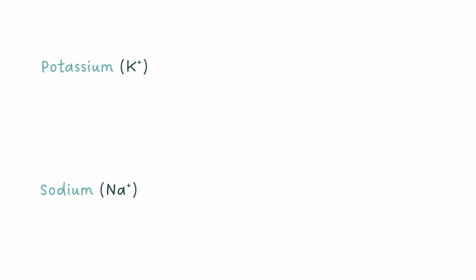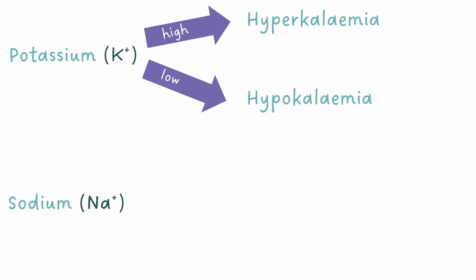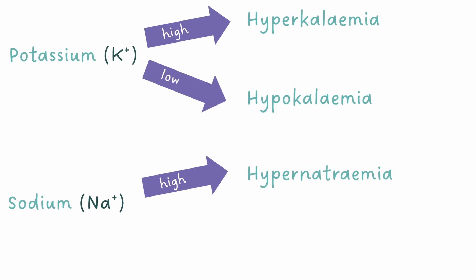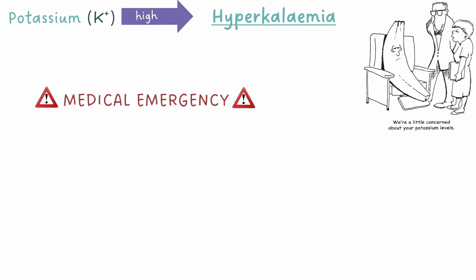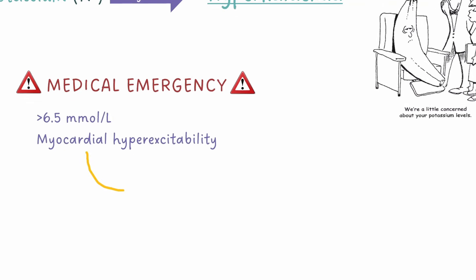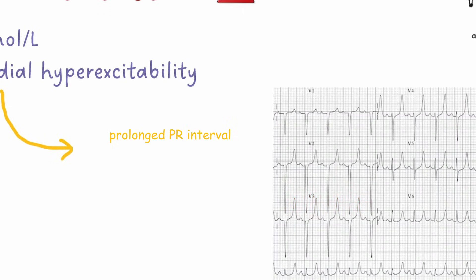Next, we have our electrolytes. We need to check for hyperkalemia, hypokalemia, hypernatremia, and hyponatremia. Hyperkalemia can be a medical emergency if it's raised above 6.5, or there are signs of myocardial hyperexcitability, such as chest pain, palpitations, or ECG changes. This ECG shows tall, tented T waves. Other hyperkalemic ECG changes are prolonged PR intervals and widened QRS complexes.